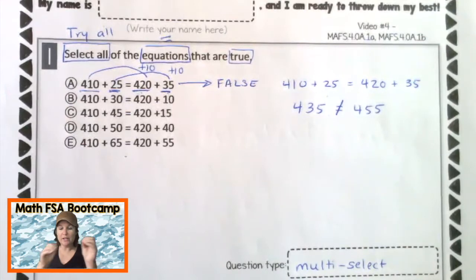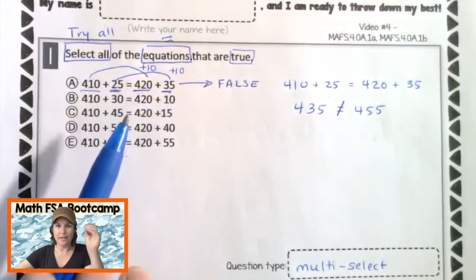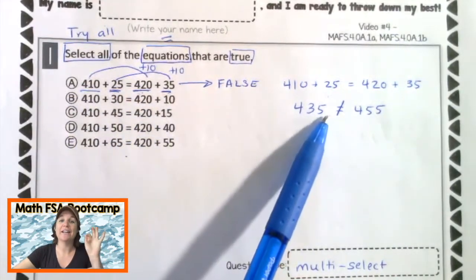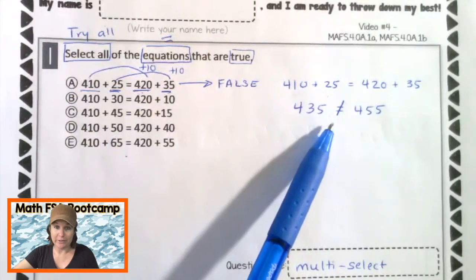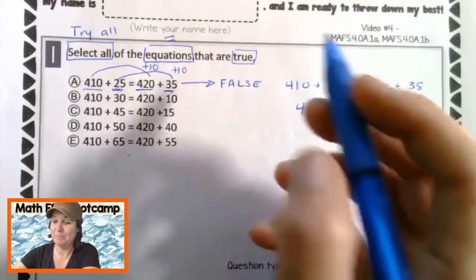Okay? So I just showed you two different ways to look at it. Here, we didn't add them up. We just looked at the numbers and the relationship between the sides of the equations. And here, we actually added it up to see if they were balanced equations. You get what I'm saying?